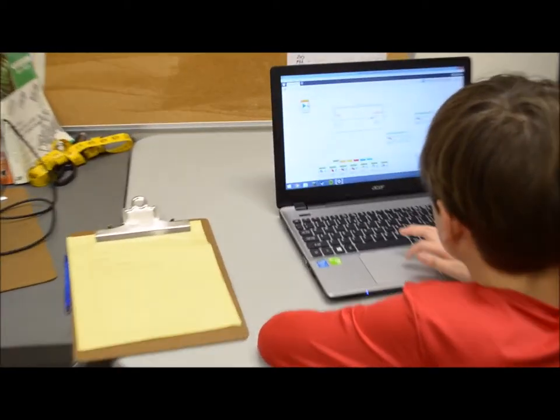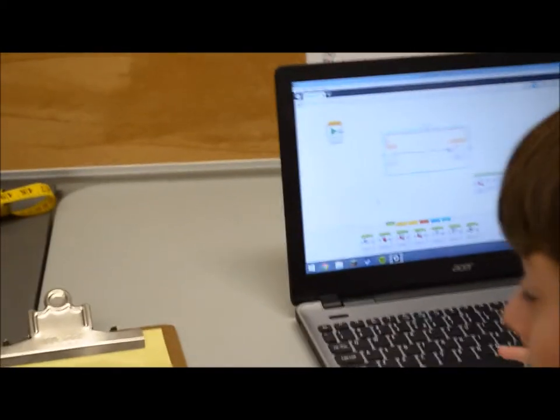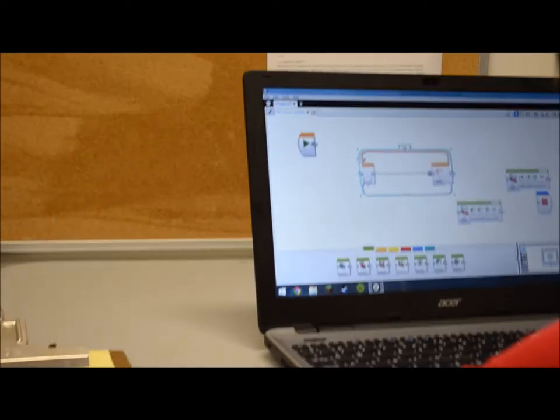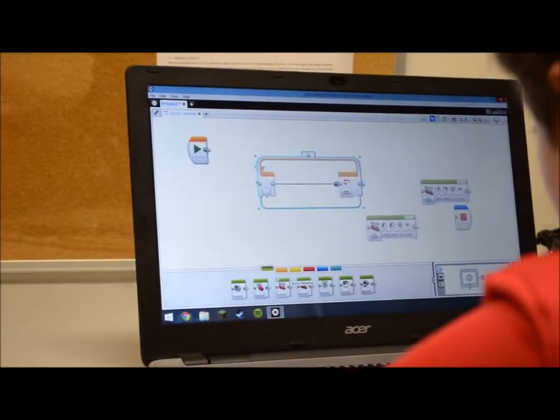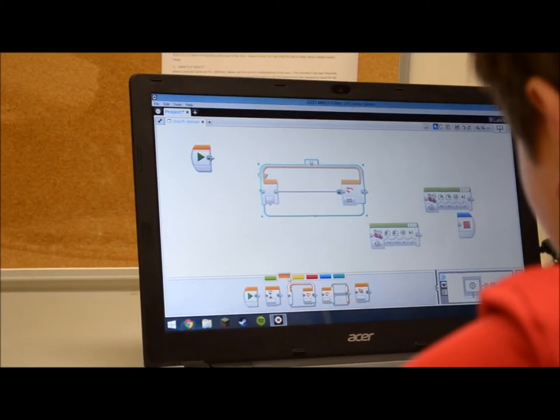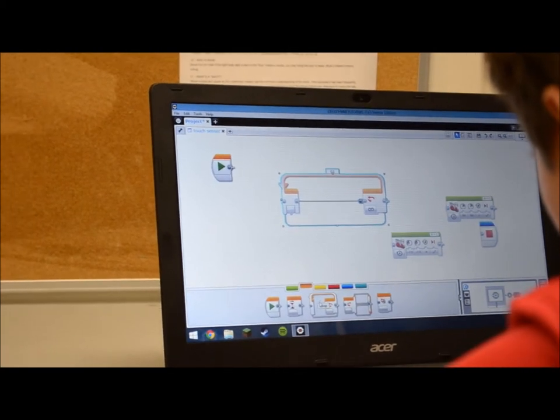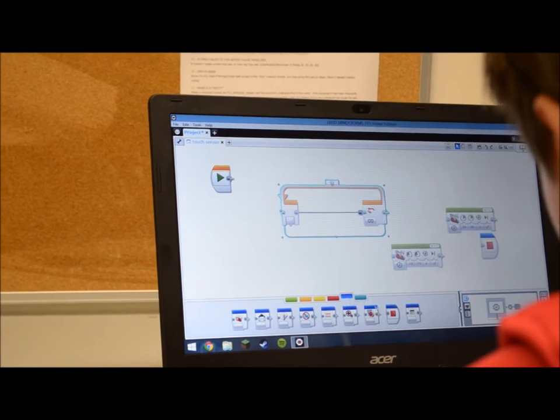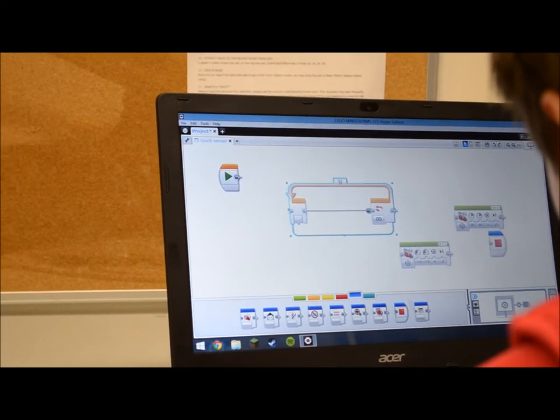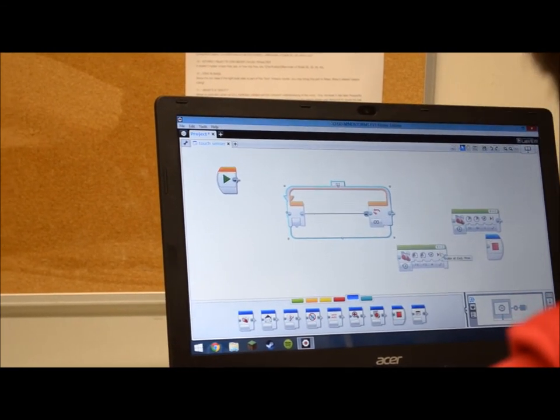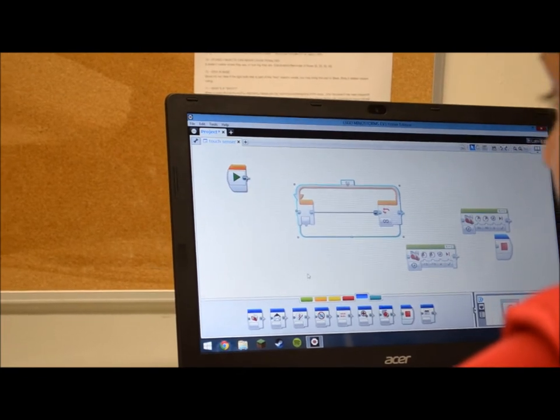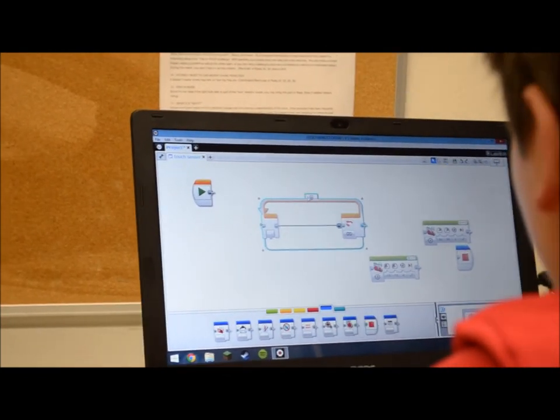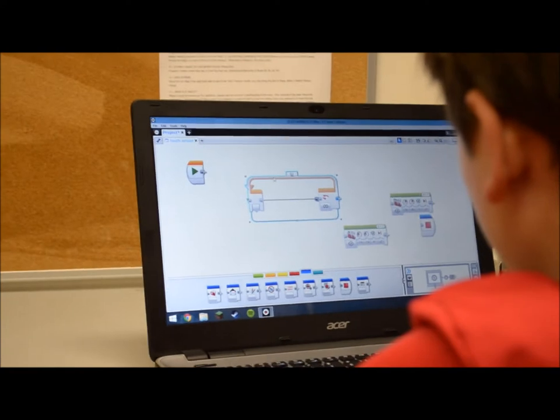And I'm going to tell you what you're going to need. First, you need two of these move things. Then you need to go to flow control, a loop, that's this. And go to advanced to start program. That's this. I'm using EV3. It might be different if you're using NXT.